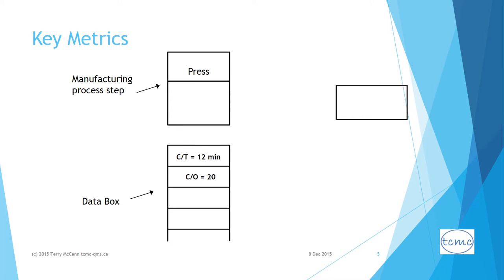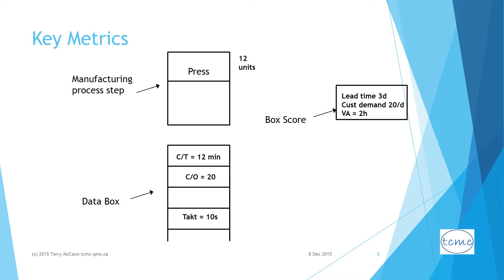The value stream map provides important standard metrics for making decisions about eliminating waste, such as each process step with its changeover or setup time and cycle time per unit, any inventory on hand for each step, supporting information, and a box score providing key operational metrics such as total lead time and how much of that time is truly adding value for the customer.